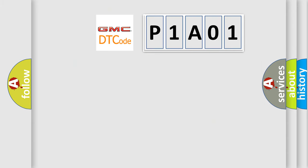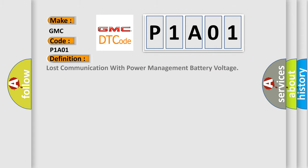So, what does the Diagnostic Trouble Code P1A01 interpret specifically for GMC car manufacturers? The basic definition is: Lost communication with power management battery voltage.